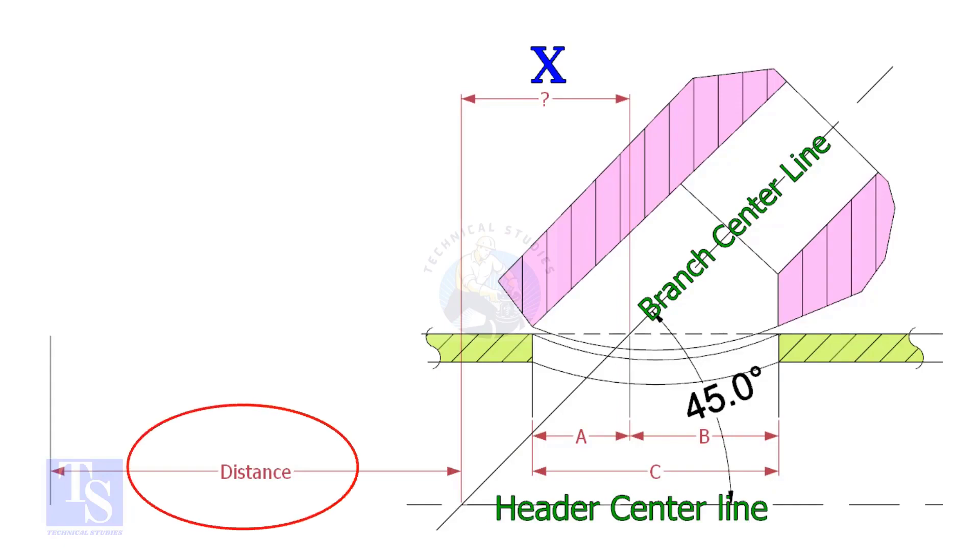In a drawing, the distance to the center of a laterolette is given from a certain point. This distance is actually on the center of the header pipe. By applying a simple calculation, we can find the actual center that comes on the top of the pipe.